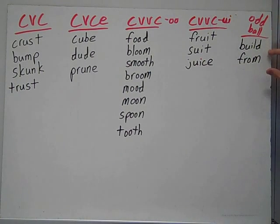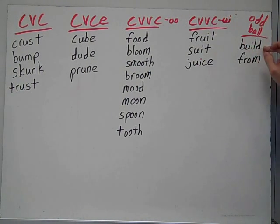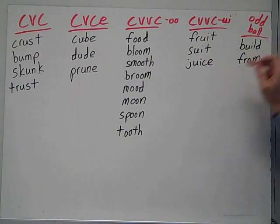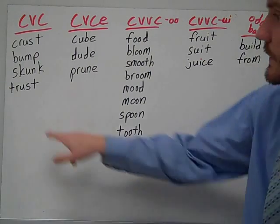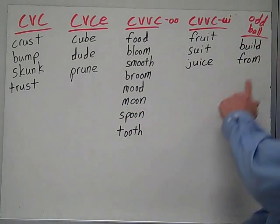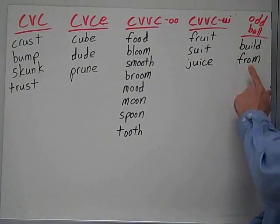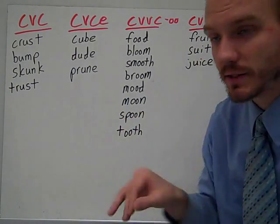Oddballs — we have build and from. They're oddballs because build should say 'booled' based on its spelling, but it doesn't — it says 'bild,' which is more of the short I sound. And from again has a short U sound, but there's an O in it, so it doesn't make any sense. That's why these are oddballs.